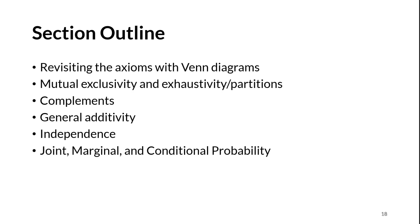First, we will revisit the axioms of probability we saw in the last section and illustrate the concepts using the familiar tool of Venn diagrams. Then we will move on to a number of useful probability rules that help us define events and compute probability.